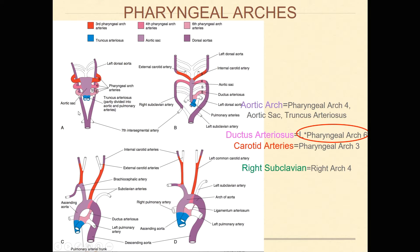Initially you have this tubular system that goes up for the first few pharyngeal arches, three through six. Your first and second really make up your face, which you'll learn in head and neck in your second term. For this purpose, we're just going to look at three through six. The first thing to realize is that arch five on the right and the left disappear.